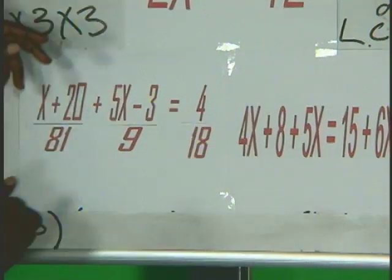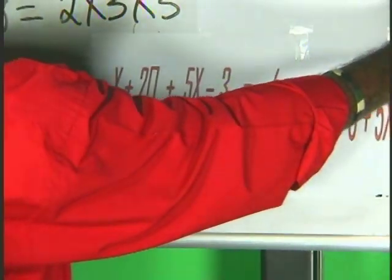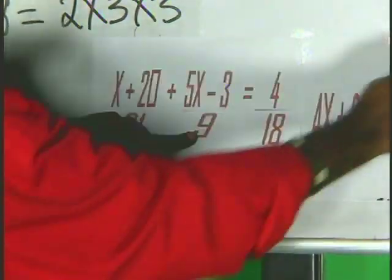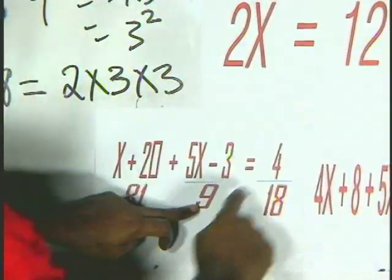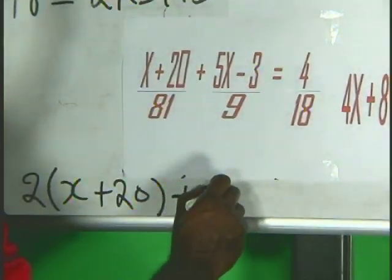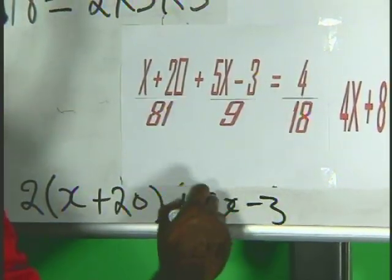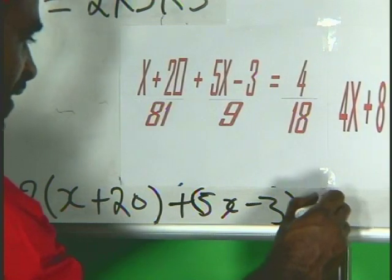And here, 9 into 2 times 81, but 9 into 81 goes 9. And 9 times 2 is 18. So, this portion, you would have 5x minus 3 to be multiplied by 18.